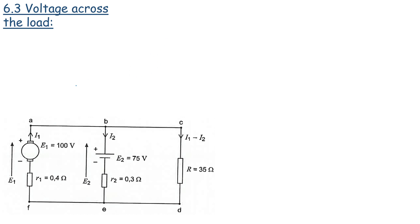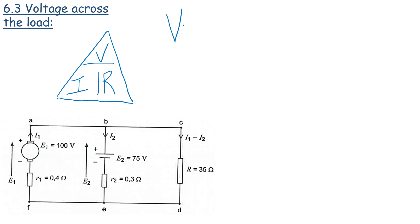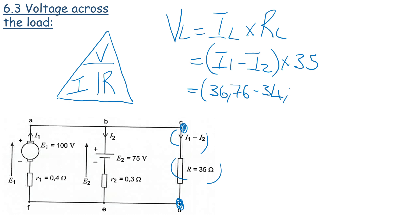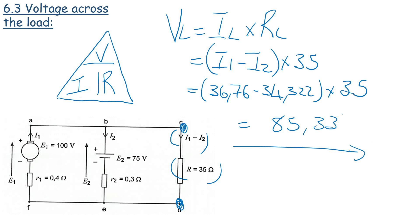Now that we have I1 and I2, we calculate the volt drop across the load using Ohm's law. The volt drop across the load equals the current through the load multiplied by the load resistance. That's (I1 - I2) × 35 = (36.76 - 34.322) × 35, giving us a load voltage of 85.33 volts. Thanks for watching this video.